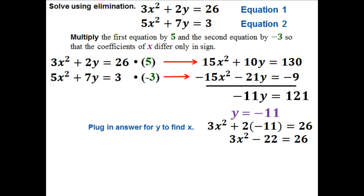So I've got 3x squared minus 22 equals 26. So that means I'm going to add 22 to both sides. That'll give me 3x squared equals 48.